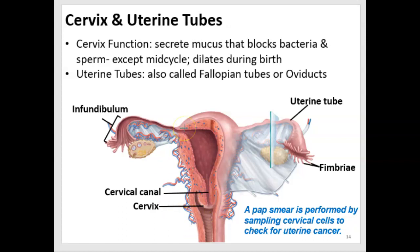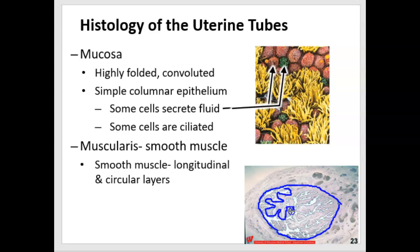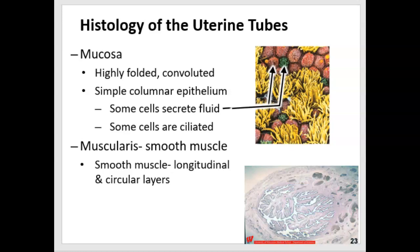Extending from the body of the uterus, we have the uterine tubes, also called oviducts, uterine horns, and fallopian tubes. Looking at the histology picture on the bottom first, the mucosa consists of epithelial tissue that is highly convoluted — it's highly folded with a lot of surface area. It is composed of simple columnar epithelium.